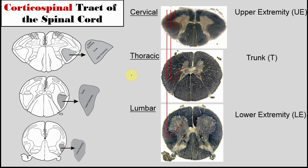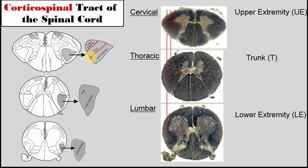Next is looking at the corticospinal tract and mototopy. At cervical levels, you have all the axons of upper motor neurons coming down and contained within the lateral corticospinal tract. At cervical levels, the motor neurons for controlling the upper extremity come out and innervate lower motor neurons. More laterally are the thoracic neuron axons — upper motor neuron axons traveling down to lower levels in the spinal cord. At cervical levels you have the upper extremity, the trunk, and then lower extremity represented in the tract.